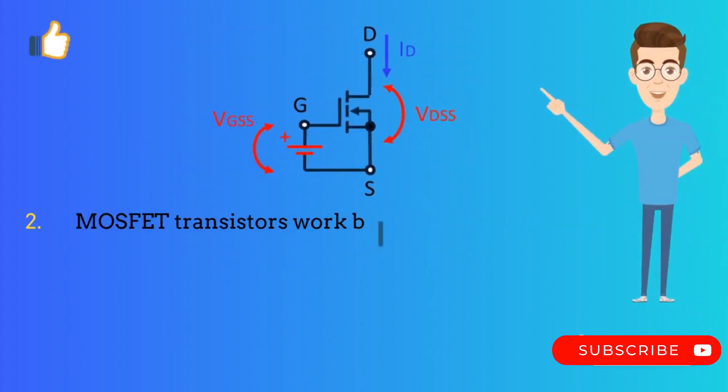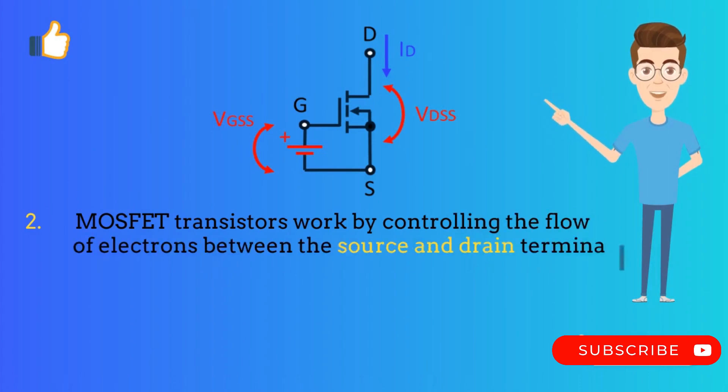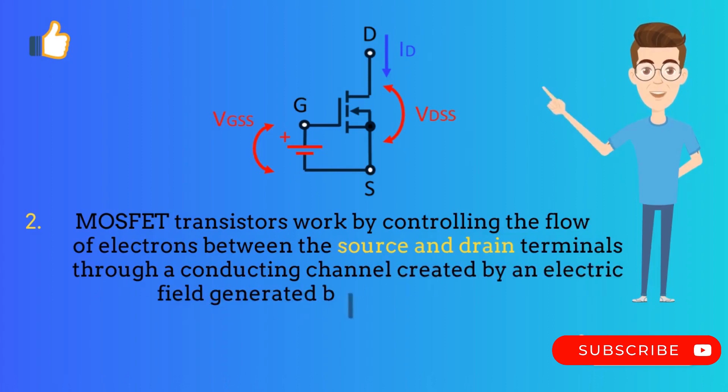MOSFET transistors work by controlling the flow of electrons between the source and drain terminals through a conducting channel created by an electric field that is generated by the gate terminal.